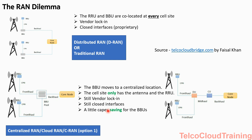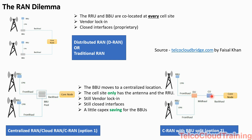We have another option for CRAN called CRAN with BBU split, or Option 2. Here the BBU has been split into two parts: the DU (Distributed Unit) and the CU (Central Unit). There is an introduction of another interface called midhall between the DU and the CU. The DU maintains functions that are close to the RRU, and the CU maintains functions that are close to the core network.